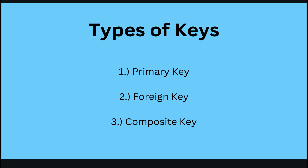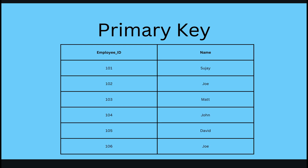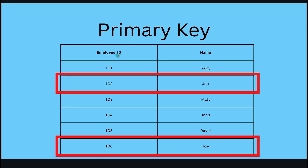You're probably thinking: what are keys in the first place? Let's try to explain this with the help of an example. In this slide you see a table — it's an employee table, and there are six employees: Sujay, Joe, Matt, John, David, and Joe. The first column is the employee ID.